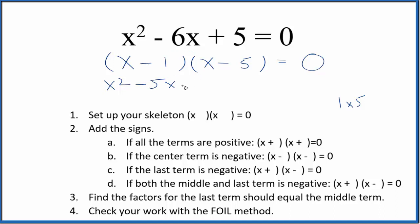Inside, negative 1 times x, that's just negative x. And then the last terms, negative 1 times negative 5, that gives us a positive 5. All that equals 0.